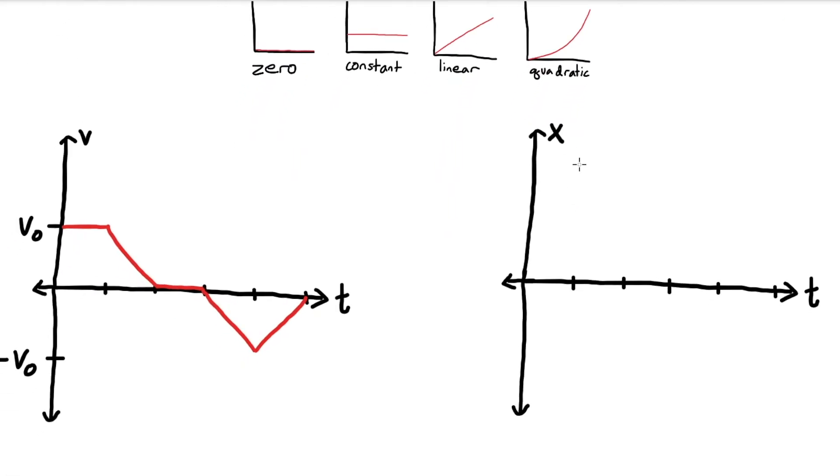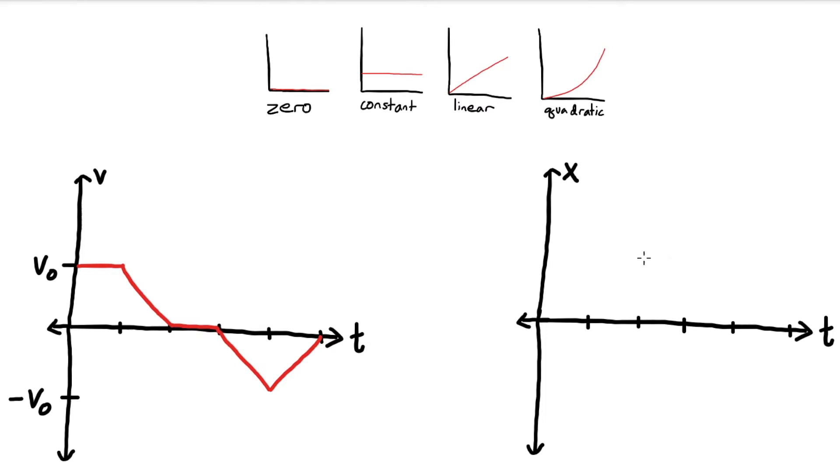Now we can take a look at an example problem. So here we need to fill in our position versus time graph based on the given velocity versus time graph. So if our velocity is positive and constant, that means our position will be positive linear. So we can draw a line for the first segment.